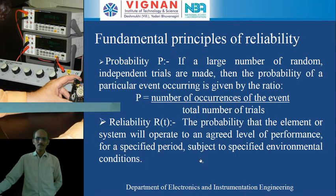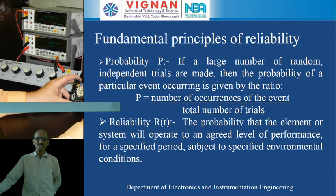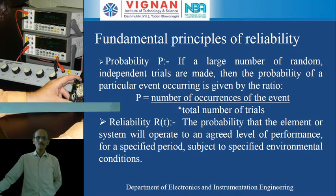The first fundamental principle is probability. Probability means the likelihood of an event occurring or not occurring. If a large number of random independent trials are made, then the probability of a particular event occurring is given by the ratio: probability P equals number of occurrences of the event divided by the total number of trials. For example, if you toss a coin, it may result in a tail or a head. If you toss the coin 100 times and get heads 30 times, then the remaining 70 times are tails.